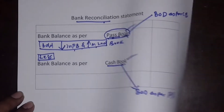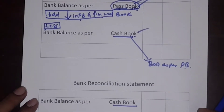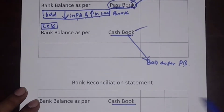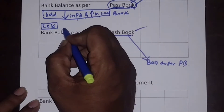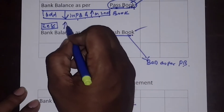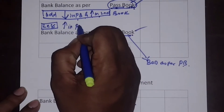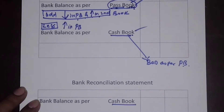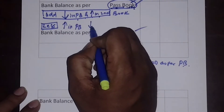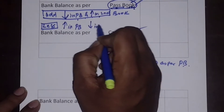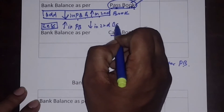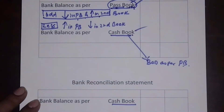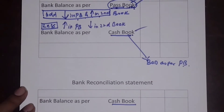What entry is to be deducted? Quite the opposite — increase in first book, which is pass book, and decrease in second book. This is the secret behind the bank reconciliation statement.